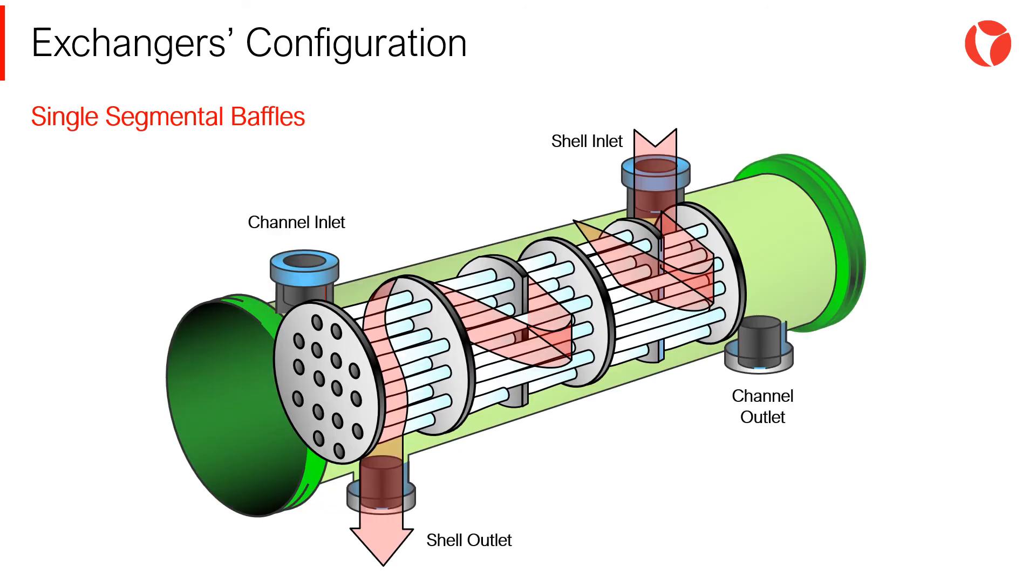The most used baffle configuration in shell and tube heat exchangers is the one shown in the picture, single segmental baffles.